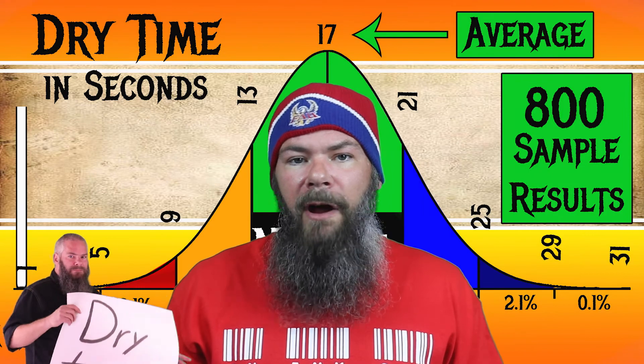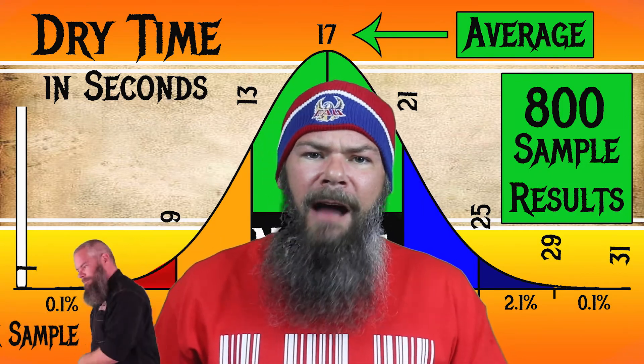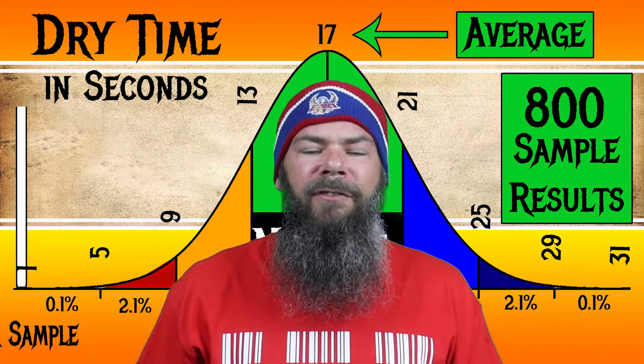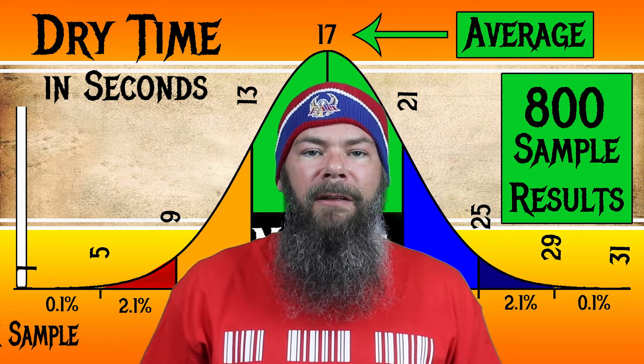To find my average dry times I use my writing samples done on Clairefontaine, Tomoe River, and Rhodia paper. I average those. Now for the inks I've tested I have found an average dry time of 17 seconds, with a realm of normal being from 13 to 21 seconds. Pelican 4001's Violet has an average dry time of 14 seconds, still making it normal.